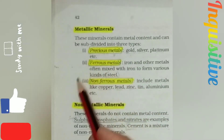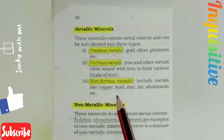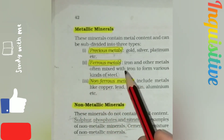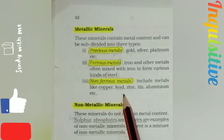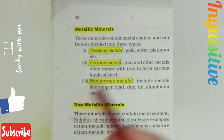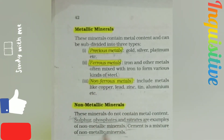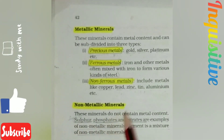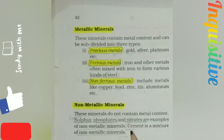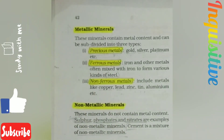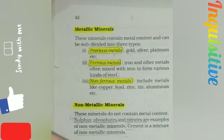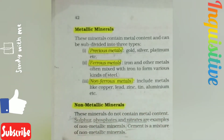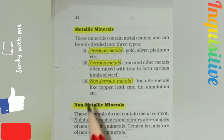Non-ferrous metals are minerals that do not contain iron but do contain other metals. Examples of non-ferrous metals are copper, lead, zinc, tin, and aluminum. Non-metallic minerals are those minerals which do not contain any kind of metal. Examples of non-metallic minerals include sulfur, granite, limestone, sandstone, marble, and nitrate — all of these have no metal content.